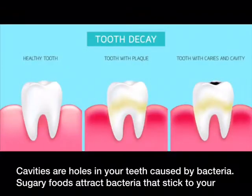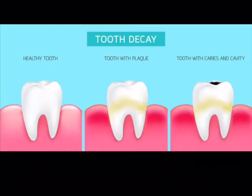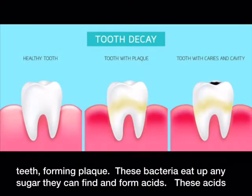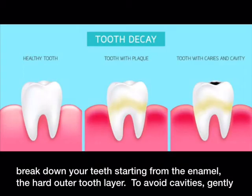Cavities are holes in your teeth caused by bacteria. Sugary foods attract bacteria that stick to your teeth, forming plaque. These bacteria eat up any sugar they can find and form acids. These acids break down your teeth starting from the enamel, the hard outer tooth layer.